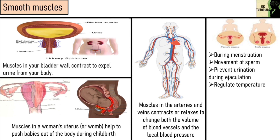Smooth muscle cells in the ovaries contract when a woman ovulates. The smooth muscles in the uterus help a woman to push out her baby, as discussed earlier.